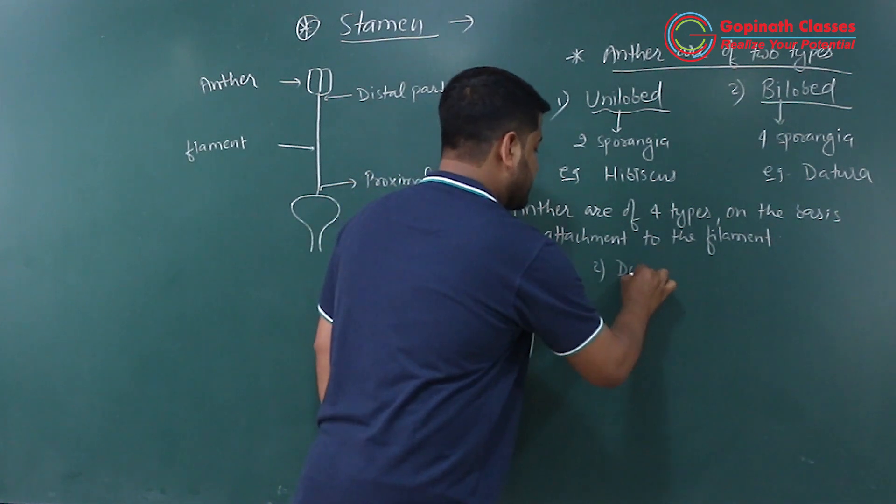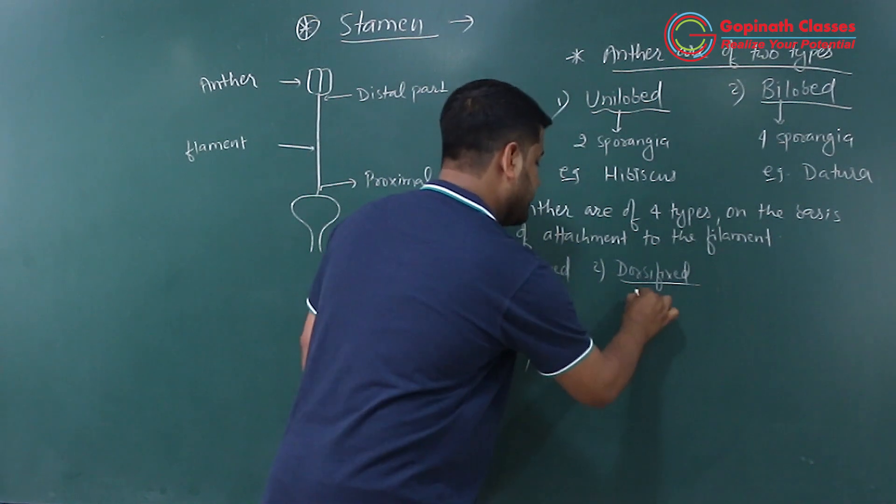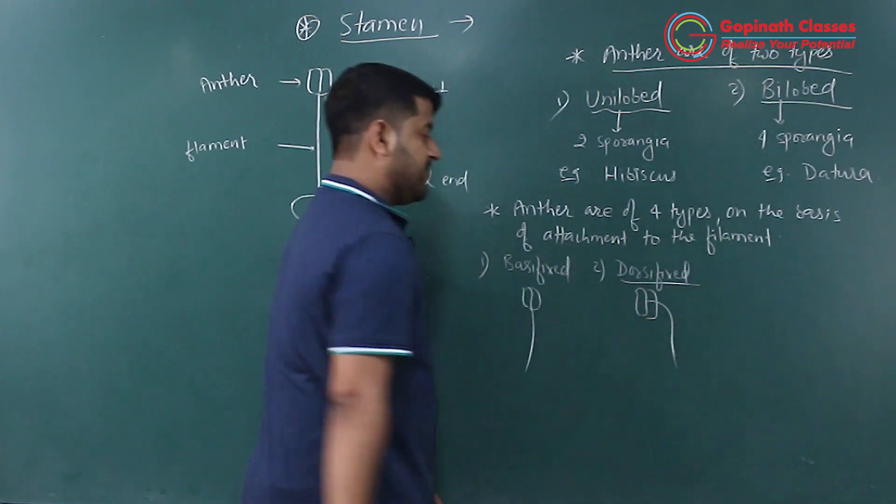Second one is dorsifixed. Means if this is the anther and from its dorsal surface the filament emerges in this way.